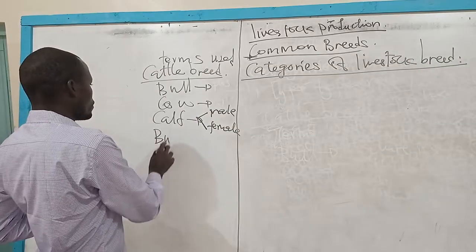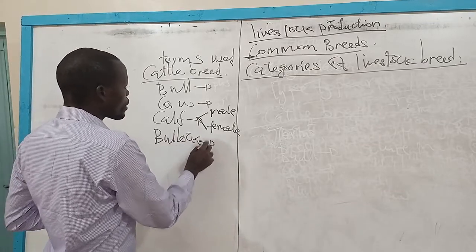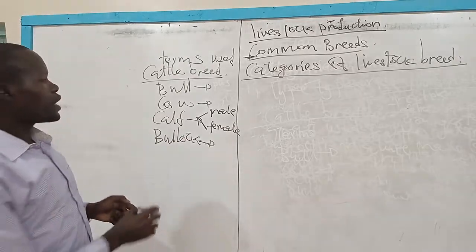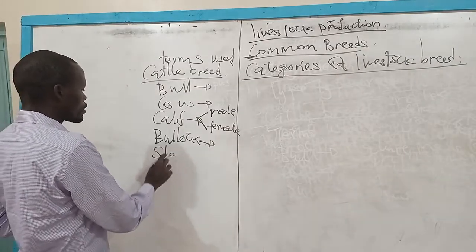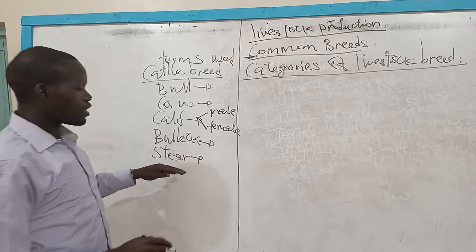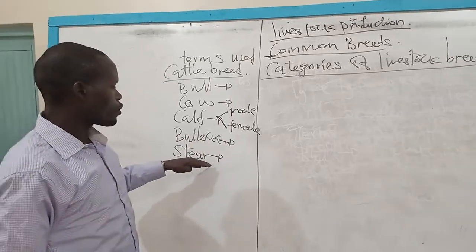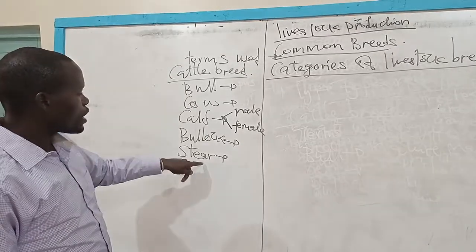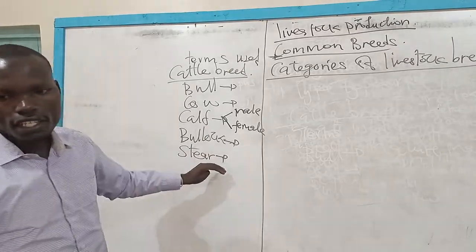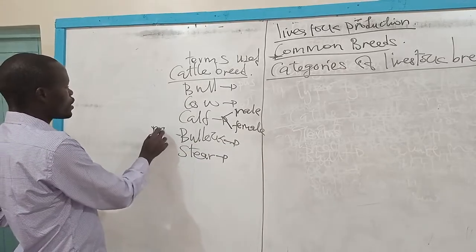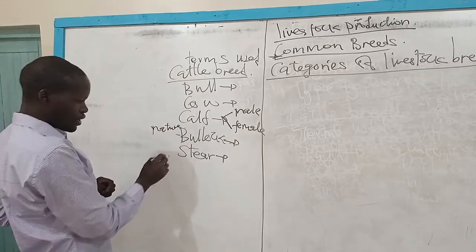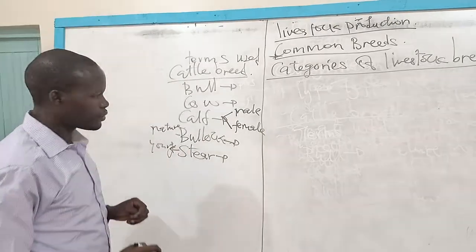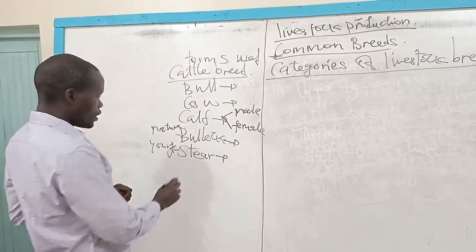We also looked at a term like a bullock. A bullock is a mature male castrated cattle. We also had another term like a steer — this is a male cattle which is castrated but young. This makes the difference between a bullock and a steer: a bullock is mature and castrated.